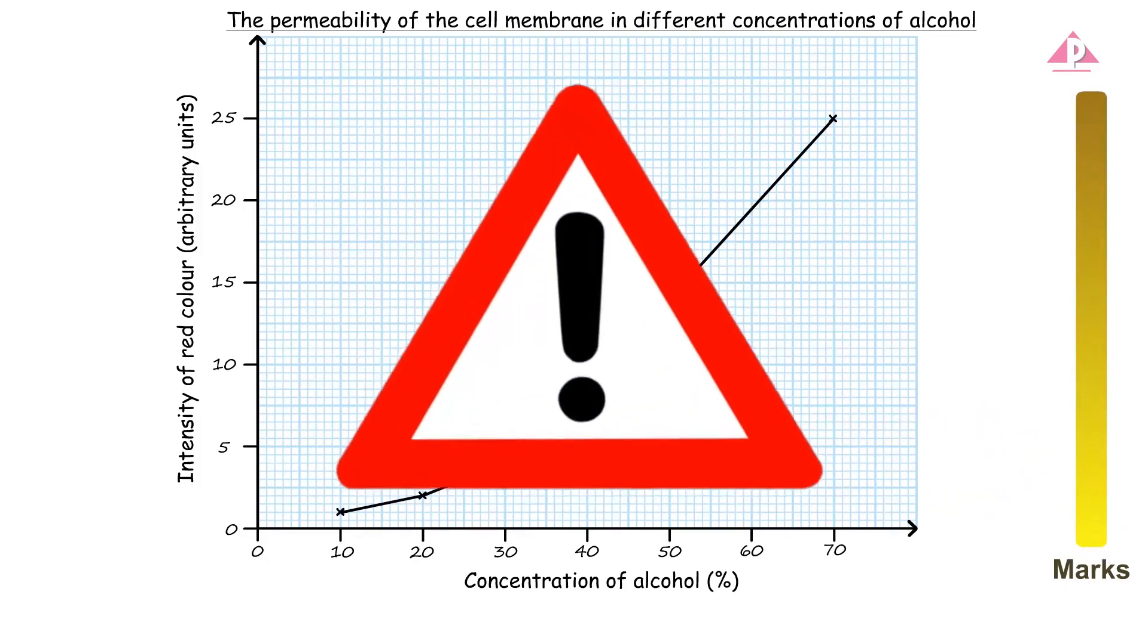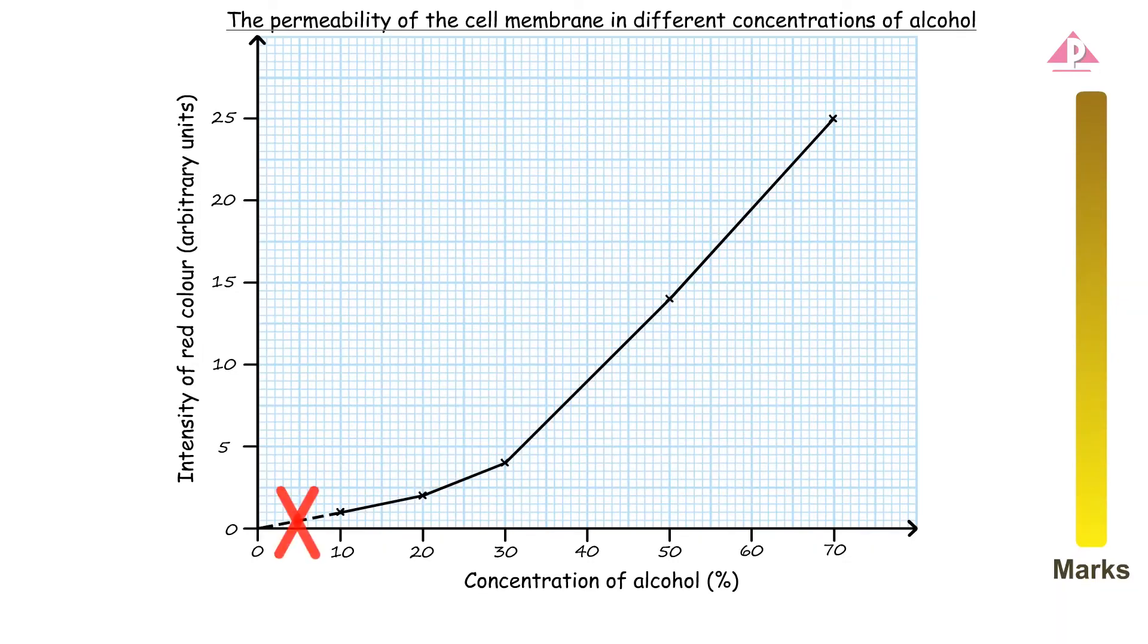But you have to be careful not to extend the line to the origin unless it contains data. This is because we are not sure about the changes in the variables beyond the scope of the experiment. If you wrongly extend the line to the origin, you will lose the mark for the correct plotting and joining of points.